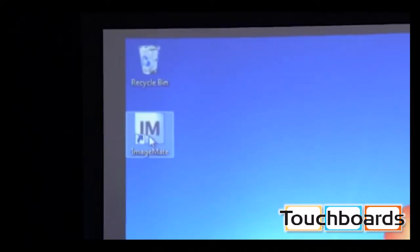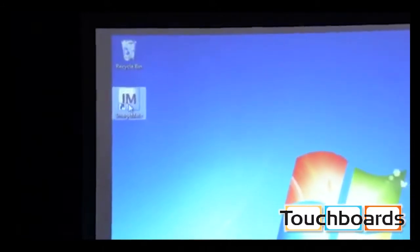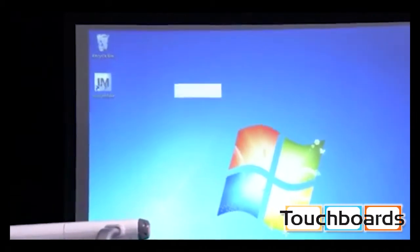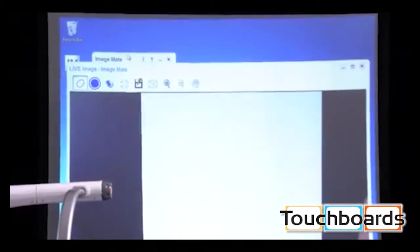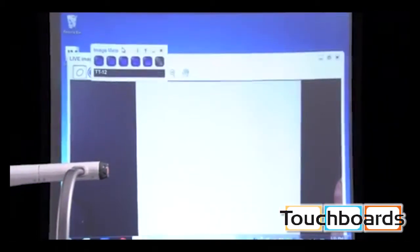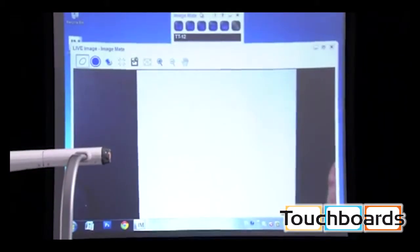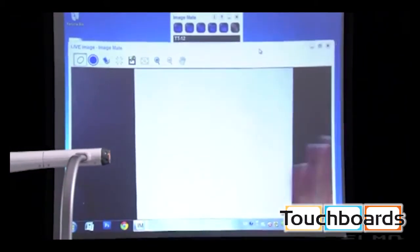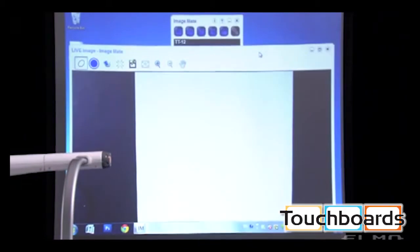Now we can open ImageMate software by clicking on the IM icon. We will see two windows appear. The top is your menu, and the bottom part is the live image from the document camera.